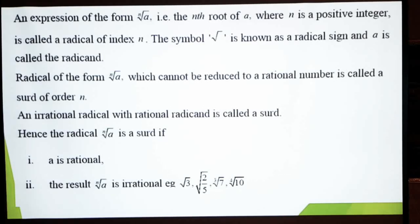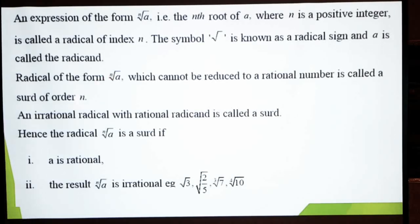یعنی 1/5، 7/9 اس طرح form میں آپ اس کو radical sign سے آزاد نہ کرے تو اس کو surd کہتے ہیں۔ اور یہاں پہ یہ جو n number ہوگا — فرض کرے cube root of 5 تو یہاں پہ n کی جگہ 3 جو ہوگا وہ اس کا order ہوگا۔ تو surd کا جو order ہوتا ہے وہ یہاں پہ موجود یہ جو n ہے جس کو ہم index کہتے ہیں یہی ہوتا ہے۔